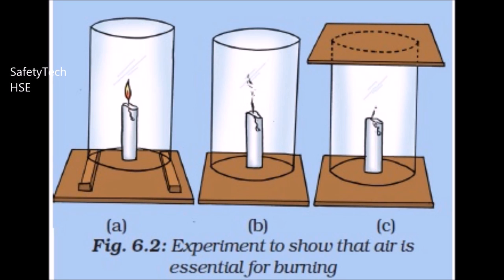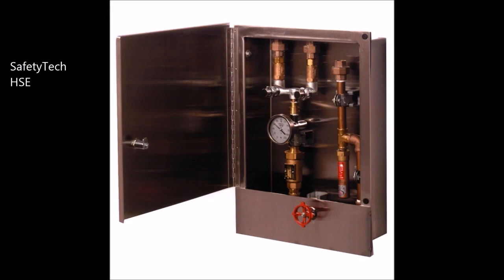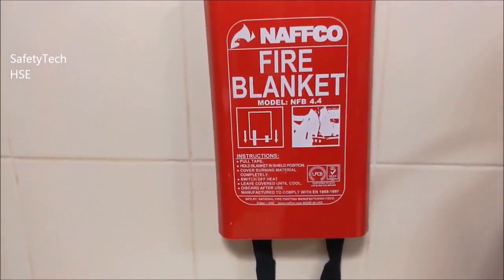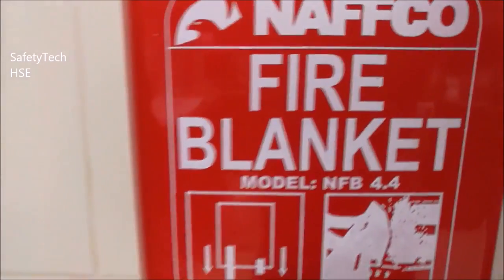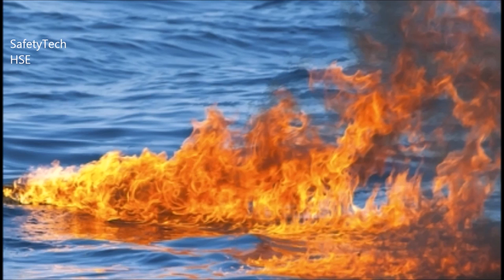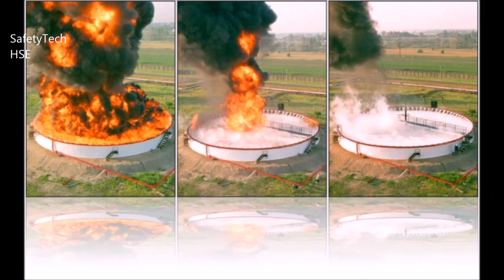On a large scale, smothering is applied in capping a burning oil well. Small fires, such as those involving a person's clothing, can be smothered with a rug, blanket etc., while the use of sand or earth on a small metal fire is a further instance of the same principle. An important practical application of the smothering method is the use of foam, which forms a viscous coating over the burning material and limits the supply of air.